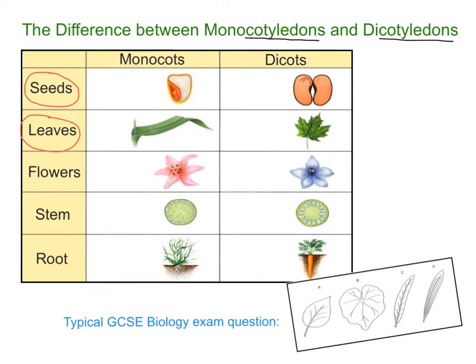Let's talk about the seeds first. A monocotyledon has a single cotyledon — a single embryonic leaf. Dicots, however, have two of these embryonic leaves stemming from the seed.